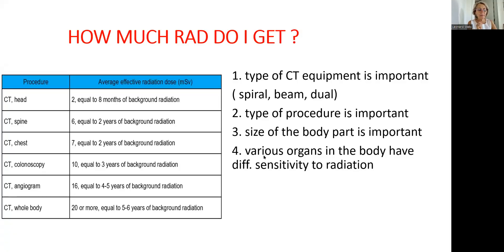Number four: different organs have different sensitivities to radiation. The most sensitive organ to radiation is bone marrow, and people who get exposed to radiation usually get blood cancer.